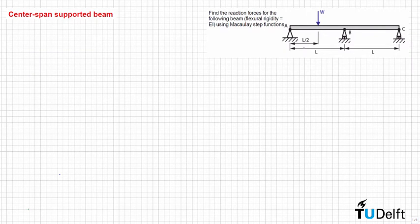In this problem we need to calculate the reaction forces for the following beam using Macaulay step functions. This is a simply supported beam with three pin supports at A, B and C. We have a point load W applied at a distance L/2 between A and B.